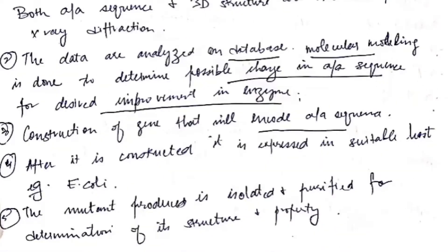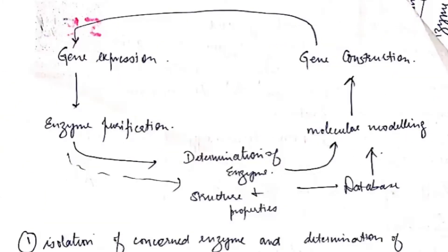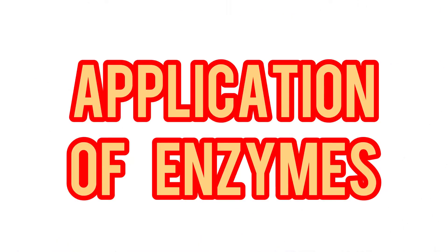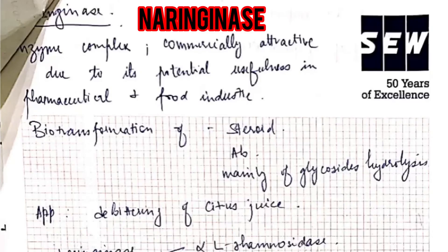Now we construct a gene that will encode the amino acid sequence. After it is constructed, it is expressed in a suitable host, for example E. coli. The mutant produced is isolated and purified for determination of its structure and property. So the steps are: gene expression, enzyme purification, determination of enzyme properties using a database, and finally gene construction using molecular modeling.